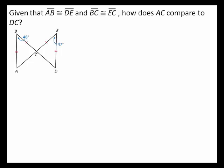In this problem, you are given that side AB is congruent to side DE and side BC is congruent to side EC.